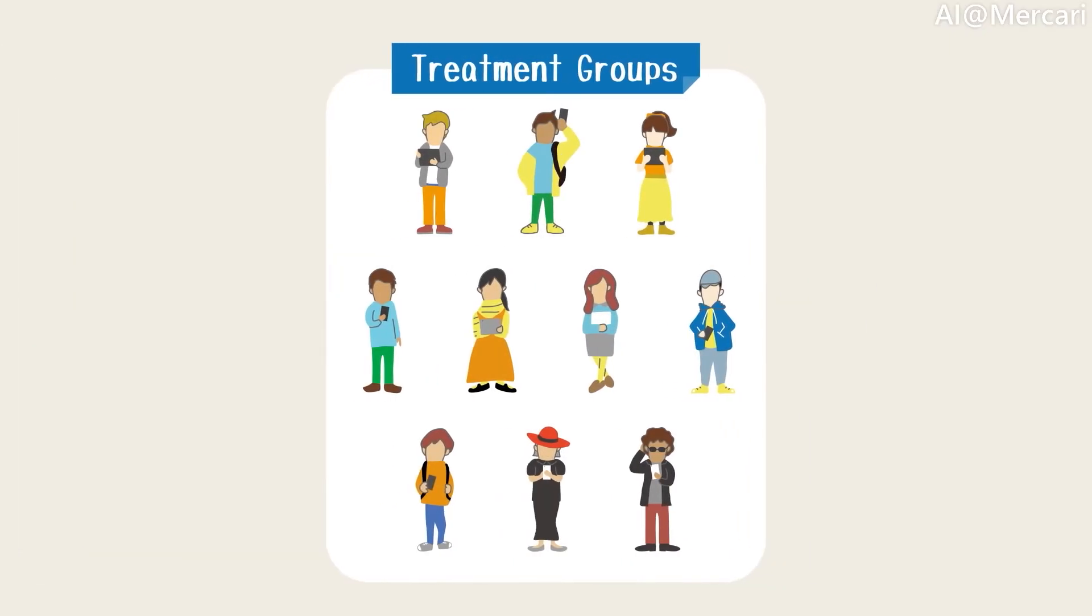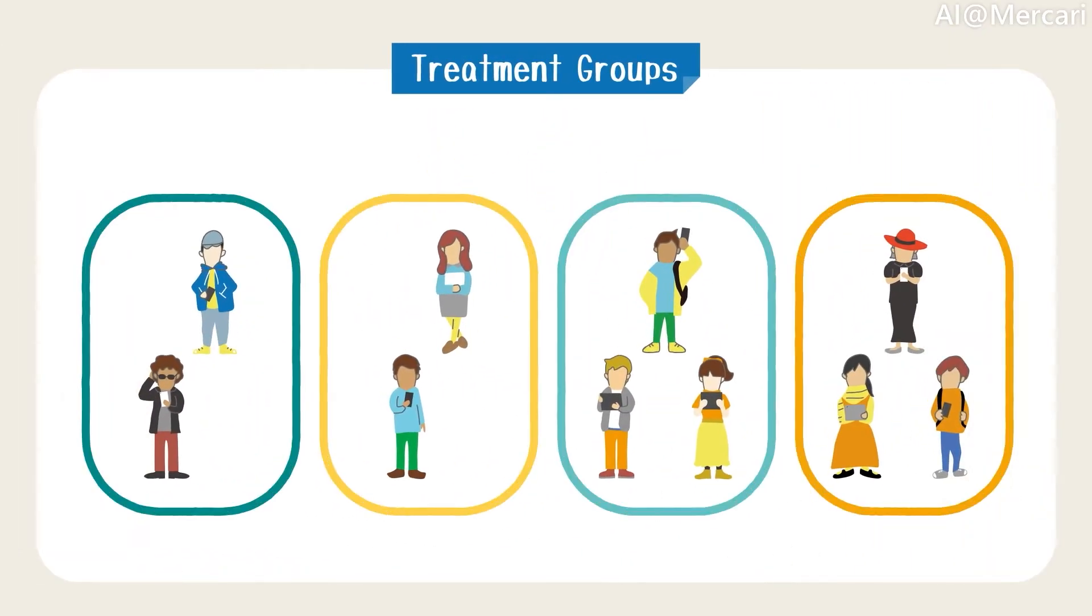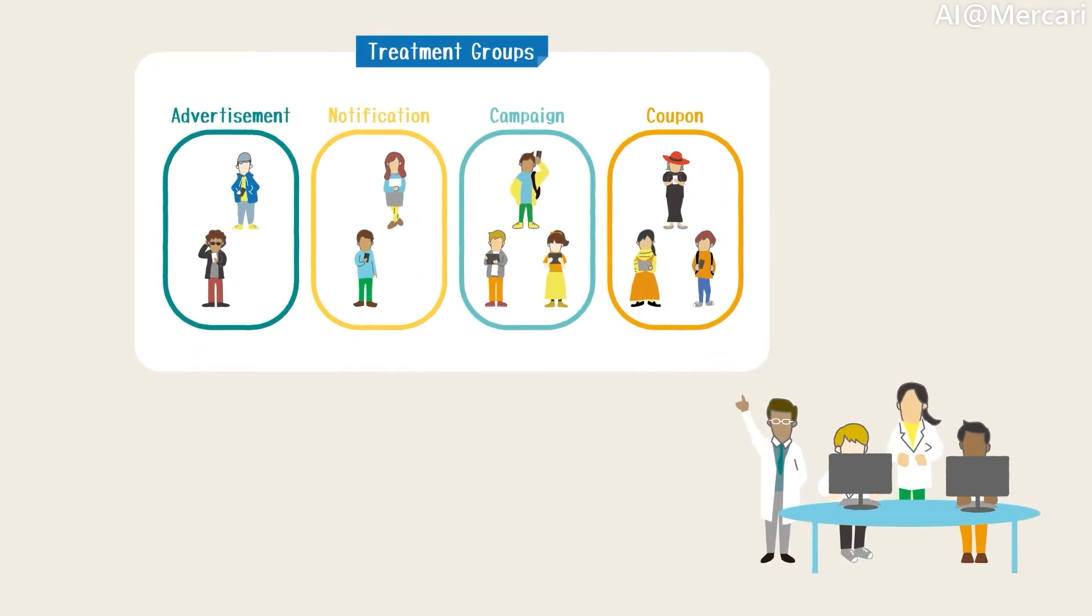In the treatment group, customers get different types of promotions for comparison. For example, some customers may get an ad with or without a landing page. Customers may get different triggers. For example, one user may get the notification when they launch the app, or only when they perform specific actions such as searching for items. For each of these settings, user data as to if they enter the campaign or use the offered coupon are used as objects for the training.